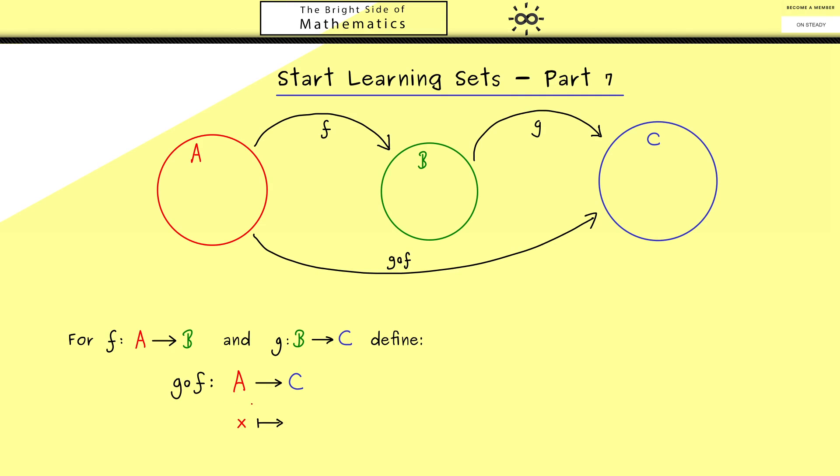The definition of this map is now given by: take an x and put it first into f and then put the result into the map g. And this is what we call the composition from now on.